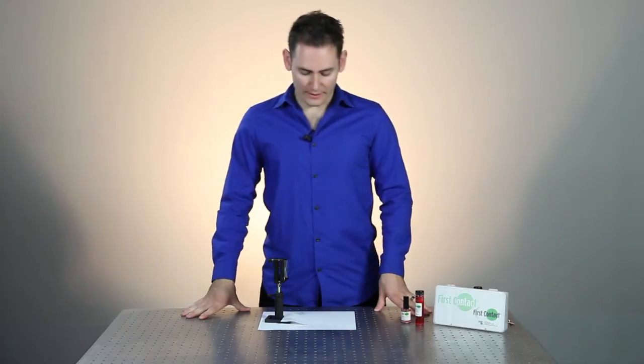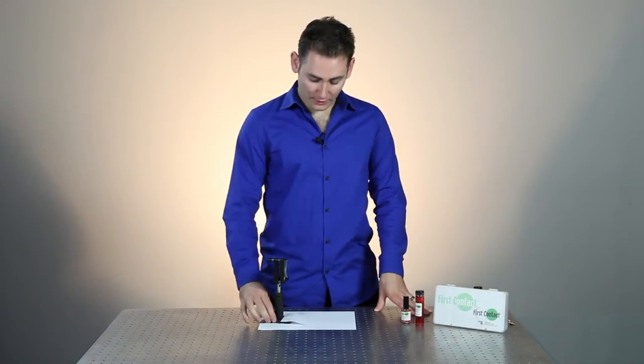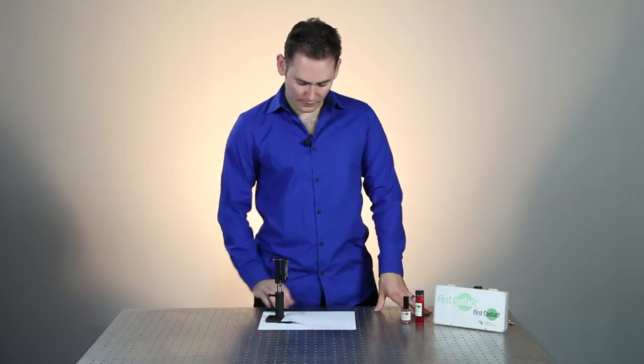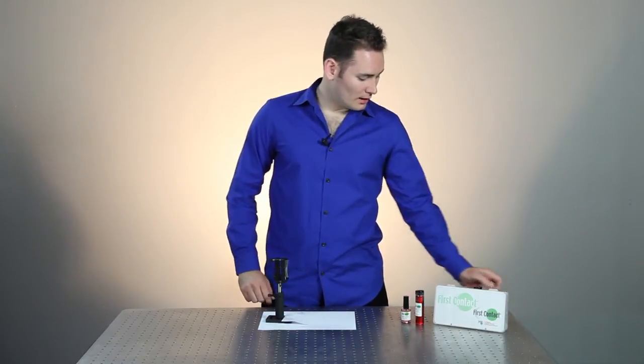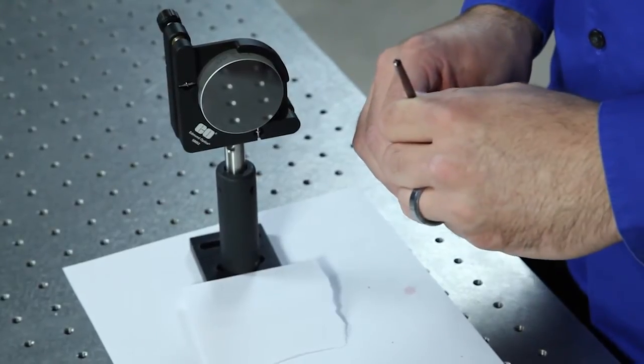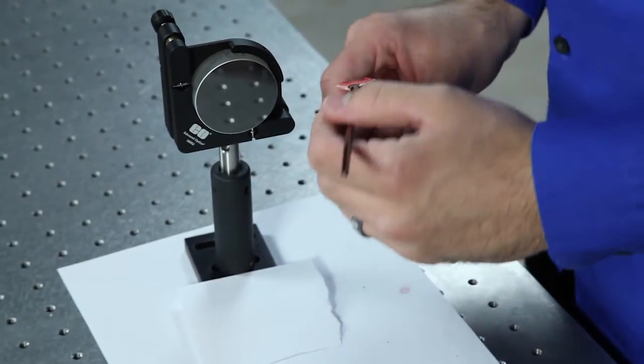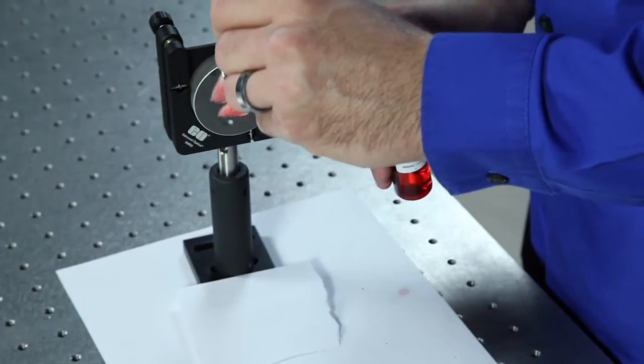First Contact Polymer can also be applied to vertical optics. Here I have an optic mounted vertically, and I've put a little piece of paper on the base just in case I drip. I'm just going to take my bottle of First Contact Polymer, dip the brush inside, and then gently brush it on the surface.